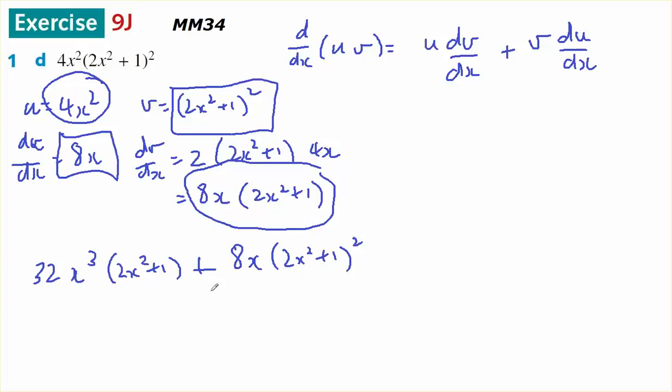Now, looking at common factors. 32 and 8, I can take an 8 out. x and x³, I can take an x out. (2x² + 1) to the power of 1, (2x² + 1) to the power of 2, I can take 1 out.